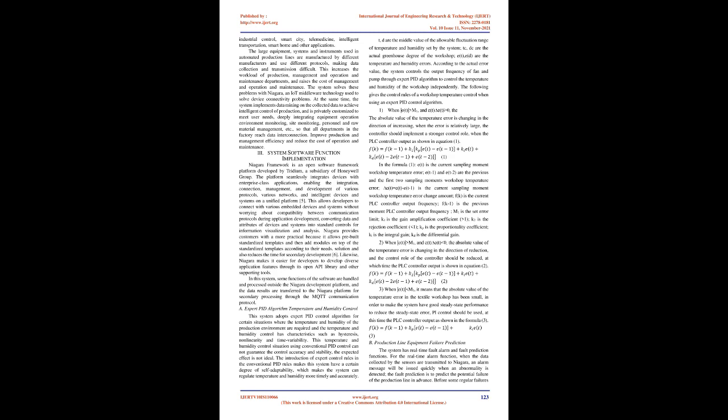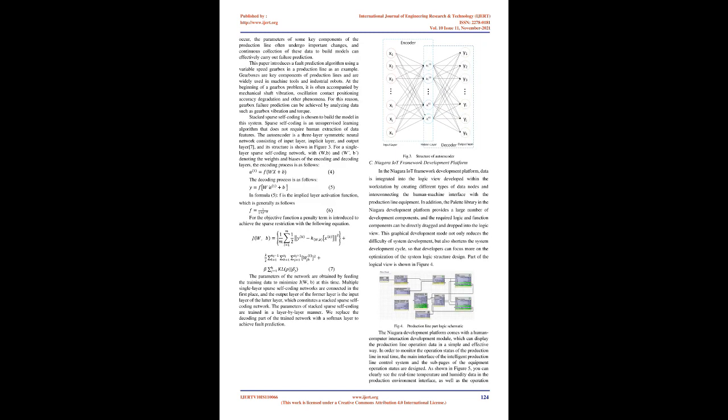The system adopts an expert PID control algorithm for situations where the temperature and humidity of the production environment are required, given that temperature and humidity control has characteristics such as hysteresis, non-linearity, and time variability. Using conventional PID control in this situation cannot guarantee control accuracy and stability, so the expected effect is not ideal. The introduction of expert control rules into the conventional PID rules gives the system a certain degree of self-adaptability, which makes the system able to regulate temperature and humidity more timely and accurately. Here, t and d are the middle values of the allowable fluctuation range of temperature and humidity set by the system; tc and dc are the actual workshop temperature and humidity; e(t) and e(d) are the temperature and humidity errors. According to the actual error value, the system controls the output frequency of fan and pump through the expert PID algorithm to independently control the temperature and humidity of the workshop.